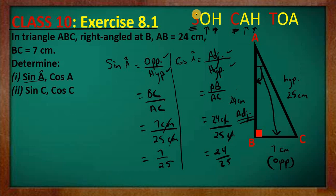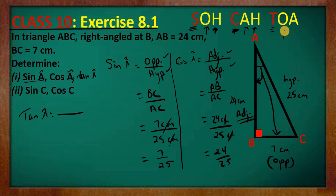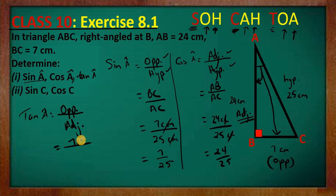These are called trigonometric ratios — sine, cosine, and tangent. Although the tangent is not asked, the tangent of angle A is opposite over adjacent. The opposite is 7 cm and the adjacent is 24 cm, so the tangent of A is 7 over 24.